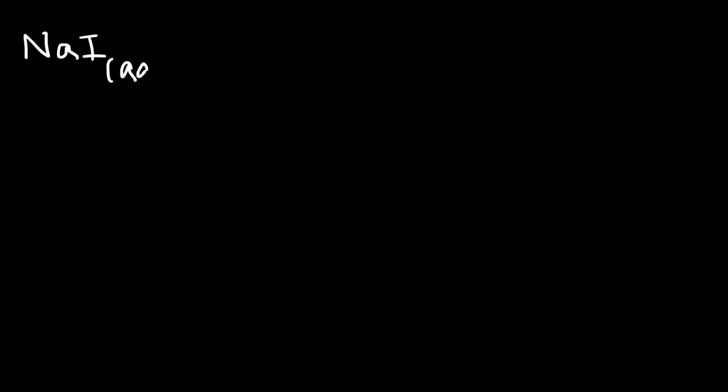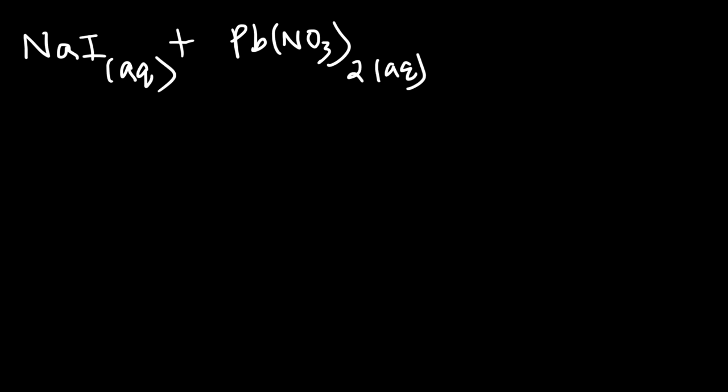In this video, we're going to talk about how to write net ionic equations. Let's start with this example. We have aqueous sodium iodide mixed with aqueous lead nitrate. How can we write the net ionic equation for this? We're going to predict the products, balance the equation, write the total ionic equation, and also the net ionic equation. So let's begin.